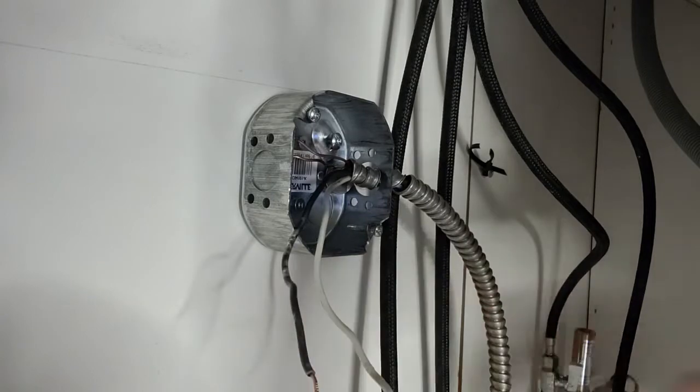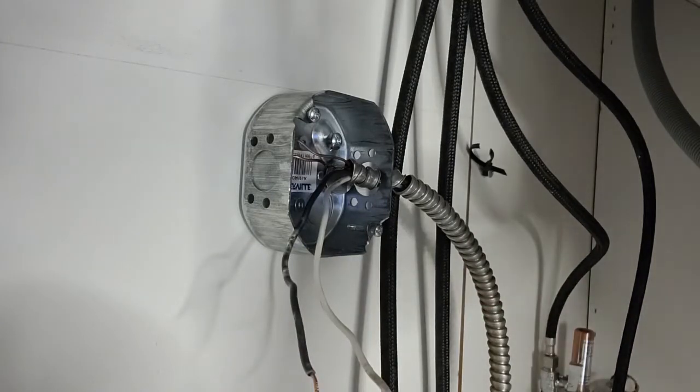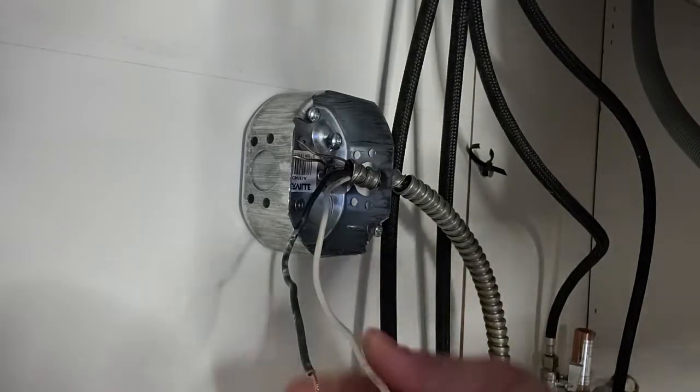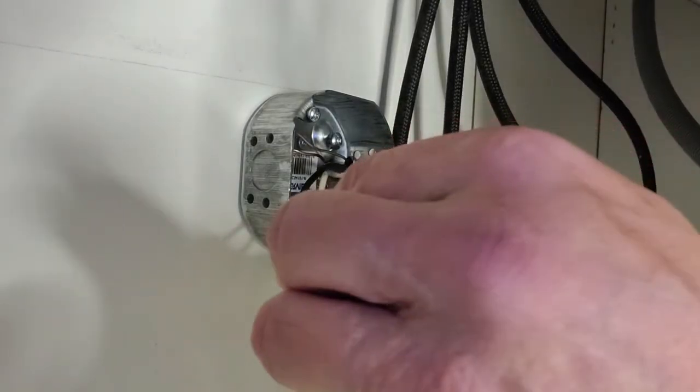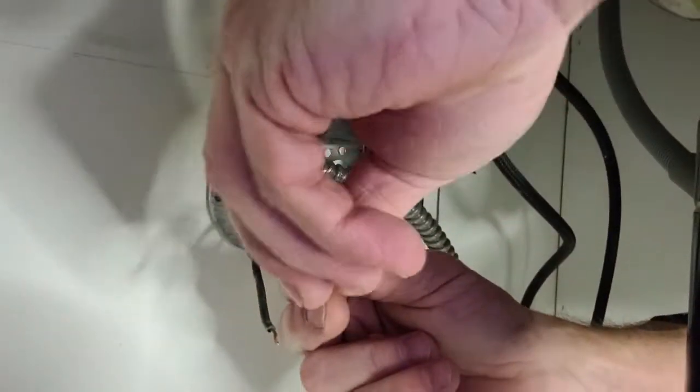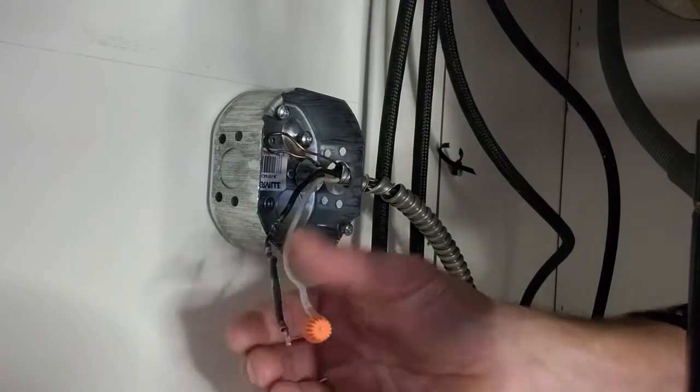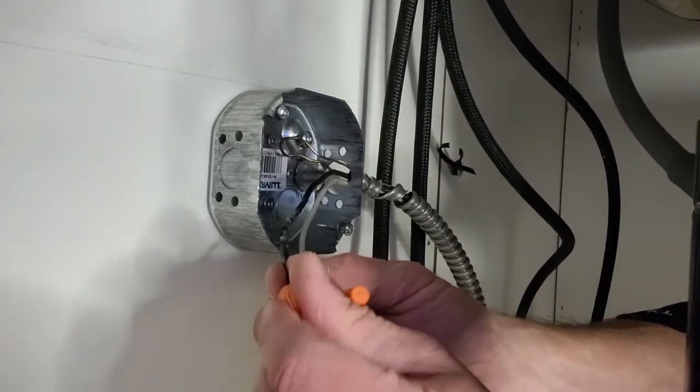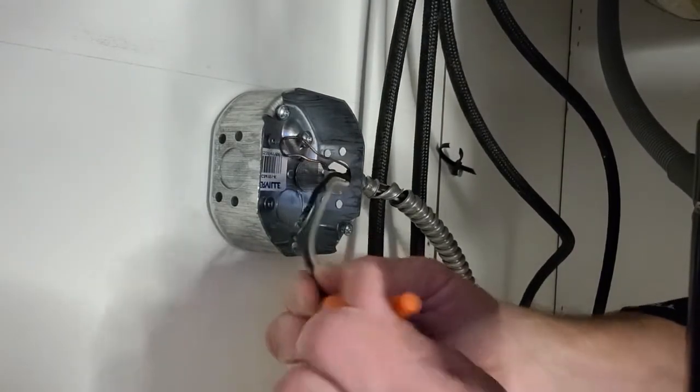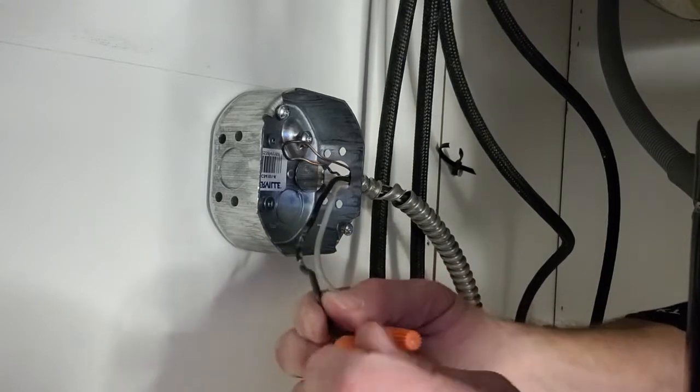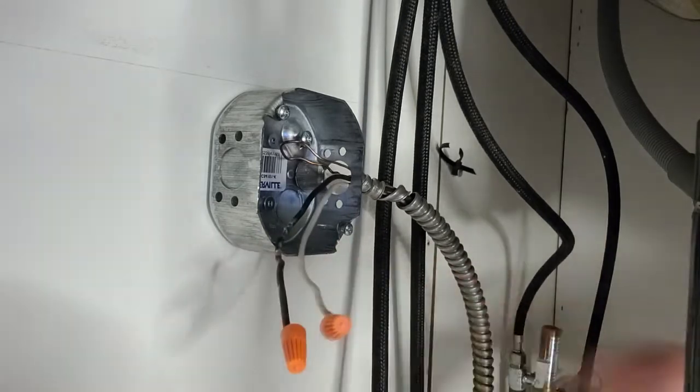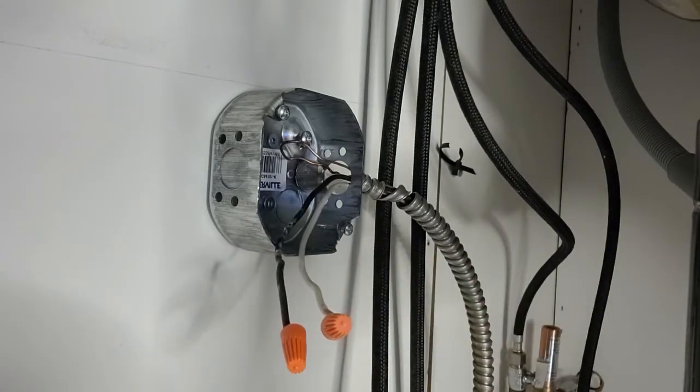But before, wires should be terminated with a marrette. So a marrette goes in the end of the wire and then you spin clockwise, just like this. It doesn't hurt to tape them so they don't fall off.